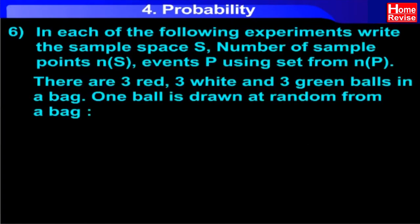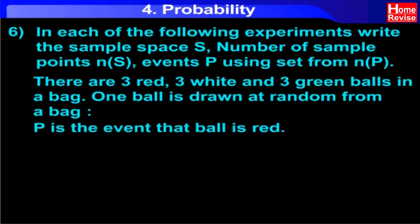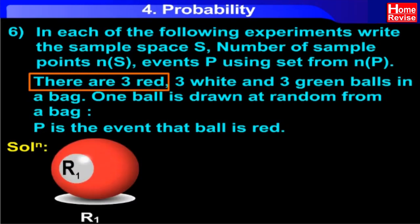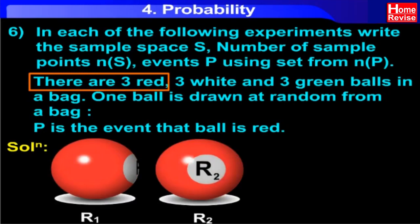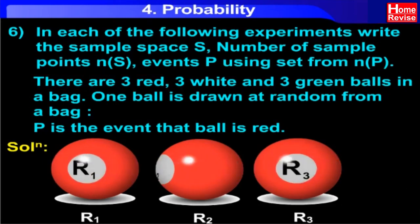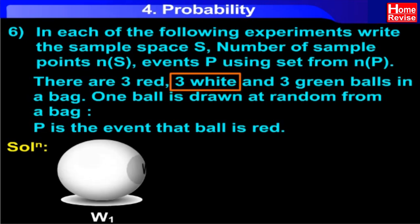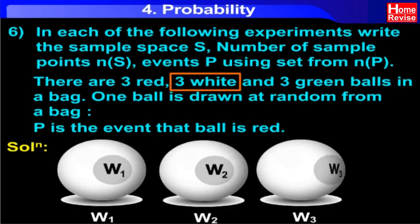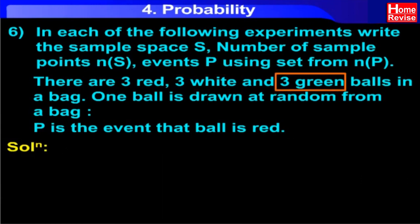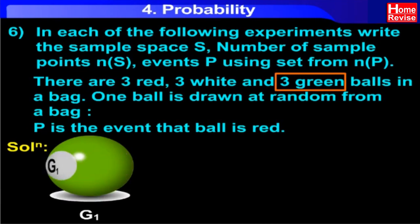There are three red, three white, and three green balls in a bag. One ball is drawn at random from the bag. P is the event that the ball is red. Solution. There are three red balls say R1, R2, R3; three white balls say W1, W2, W3; and three green balls say G1, G2, G3.